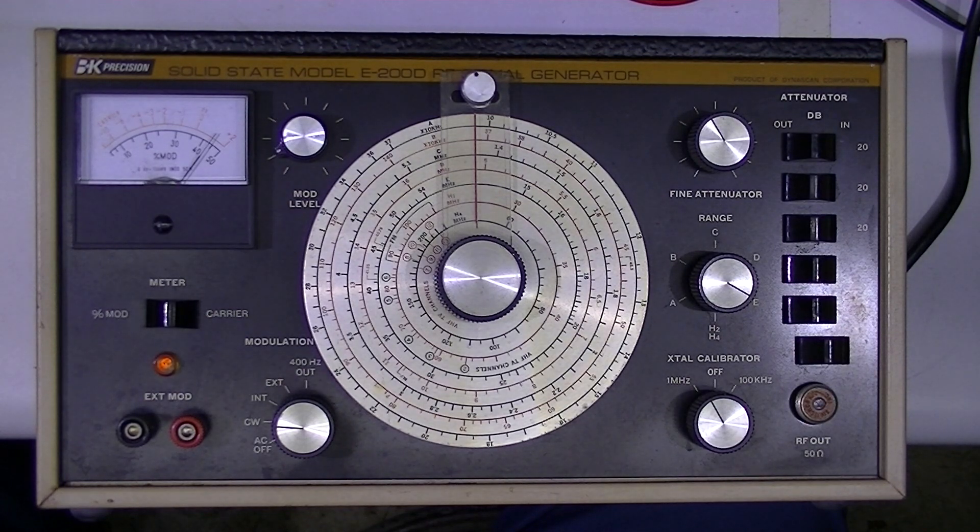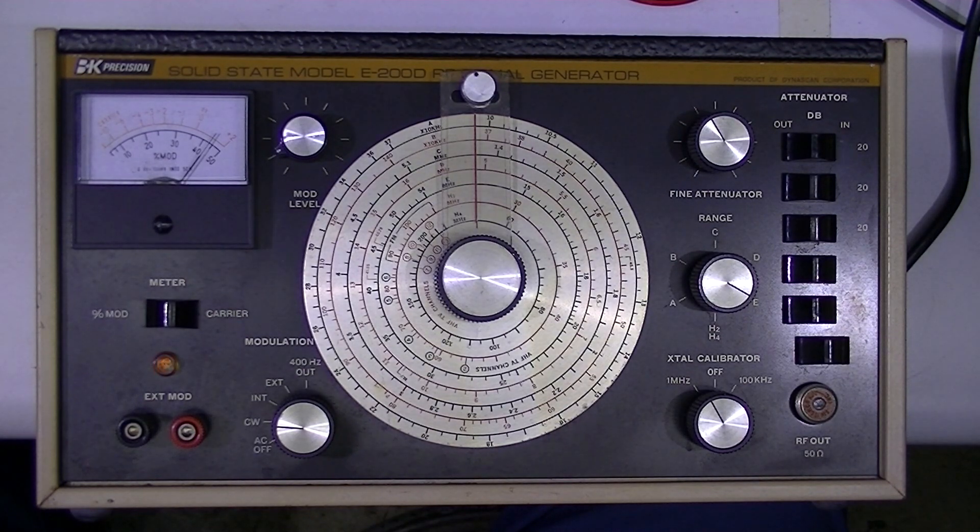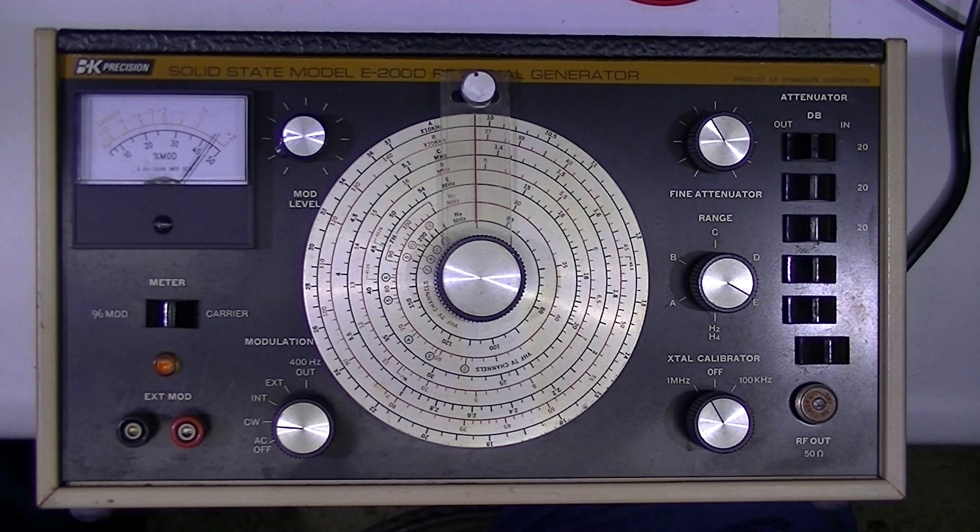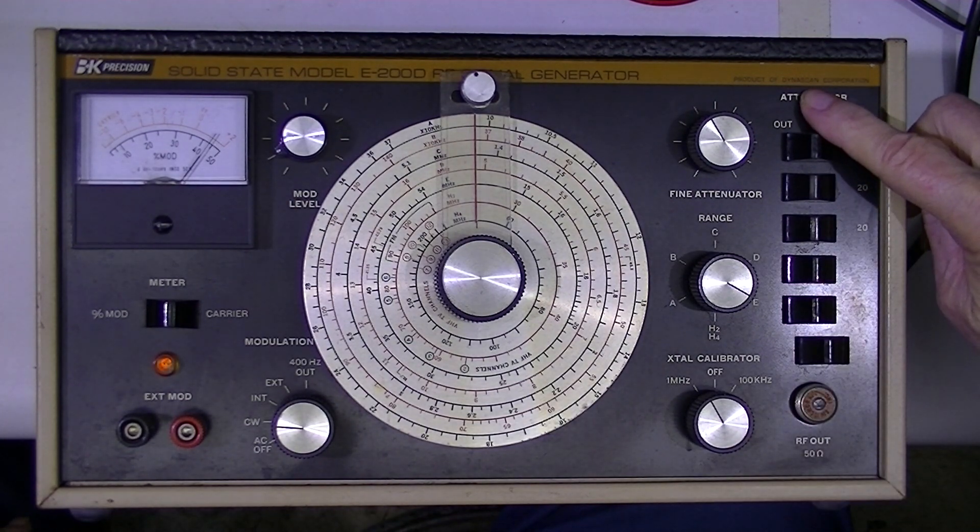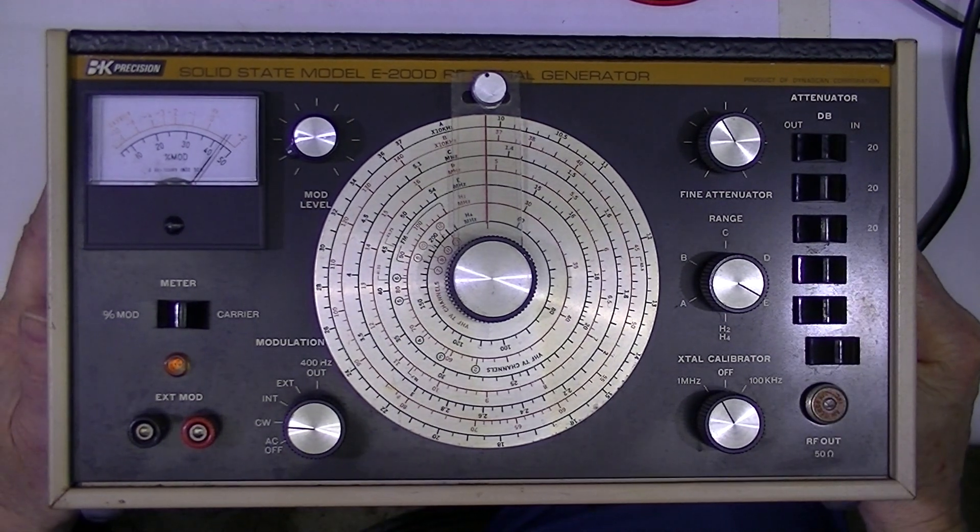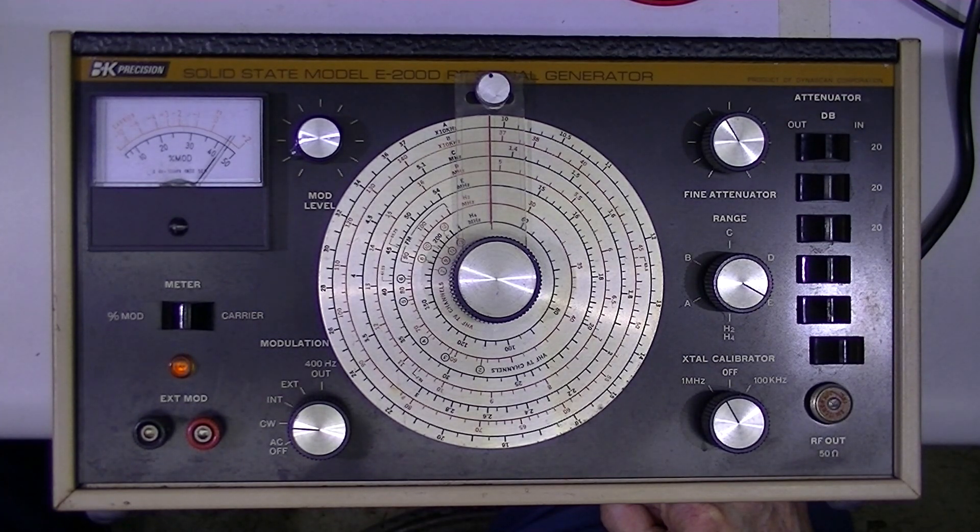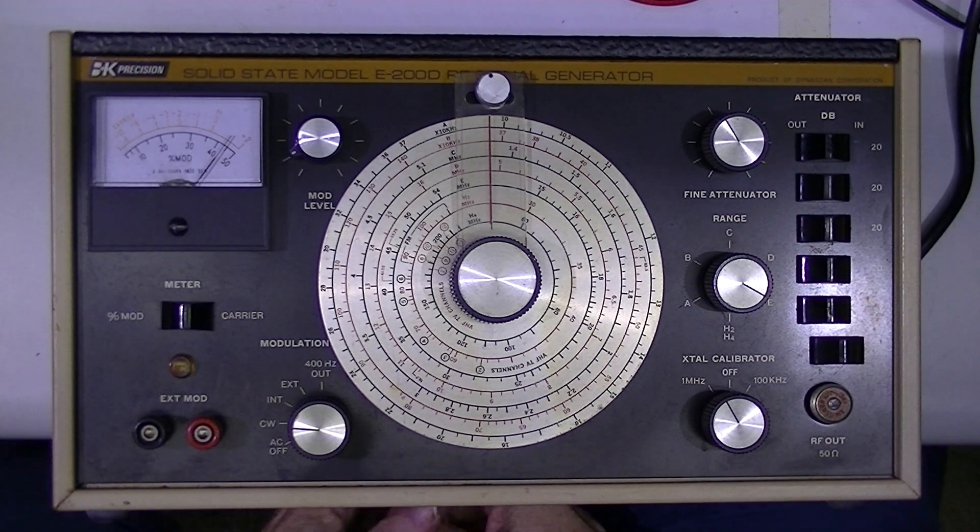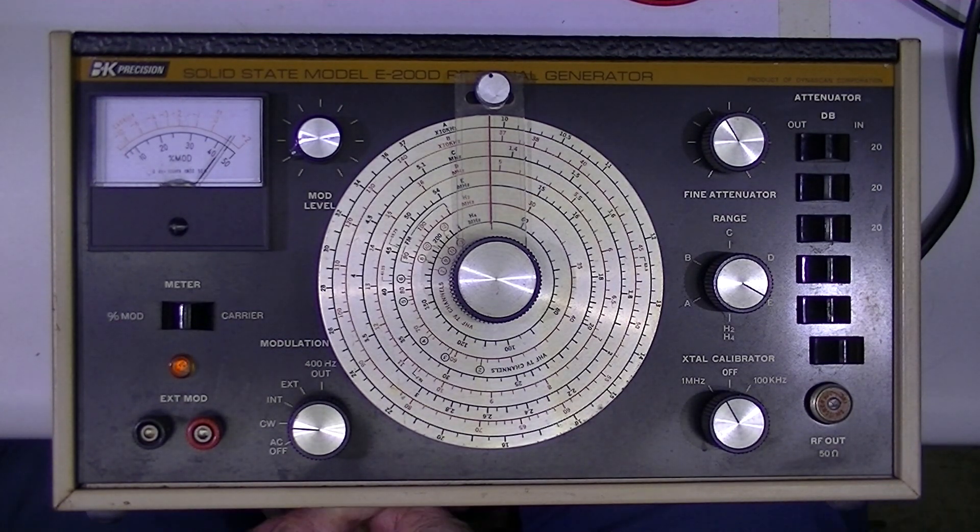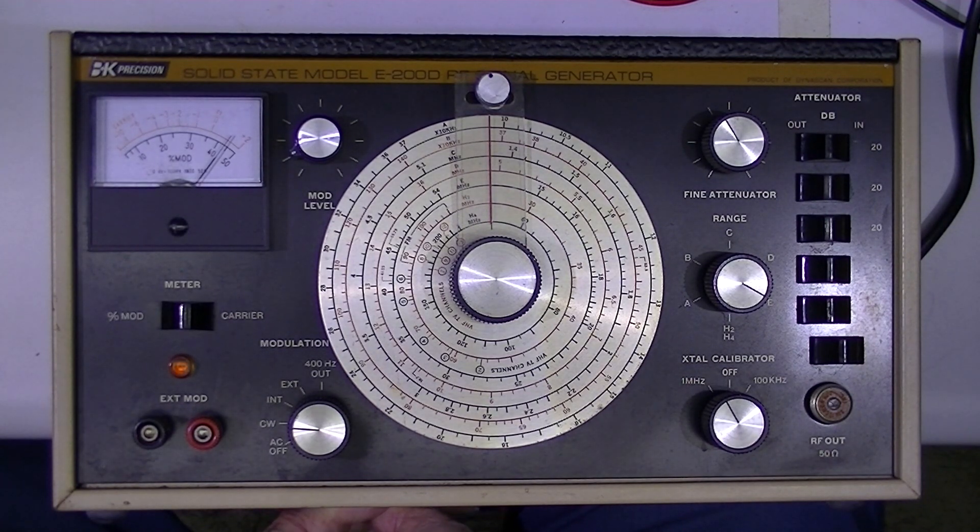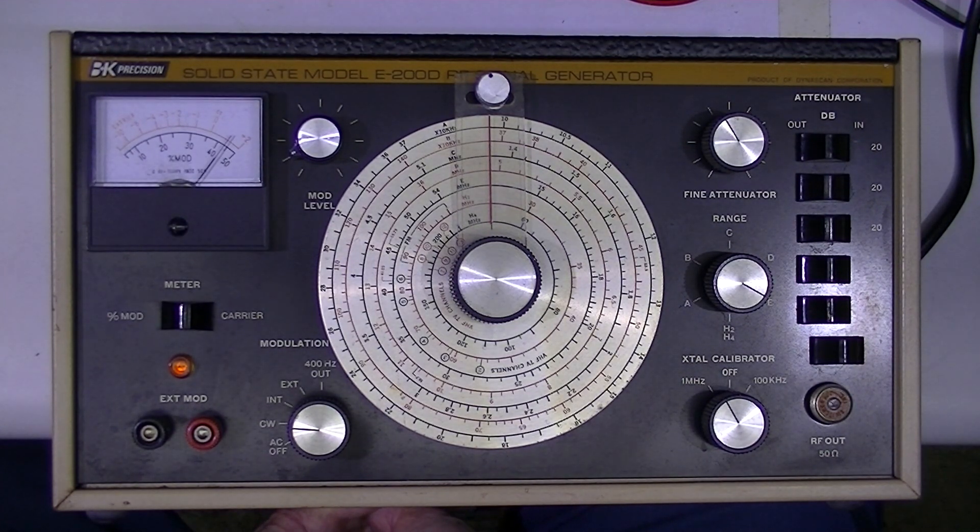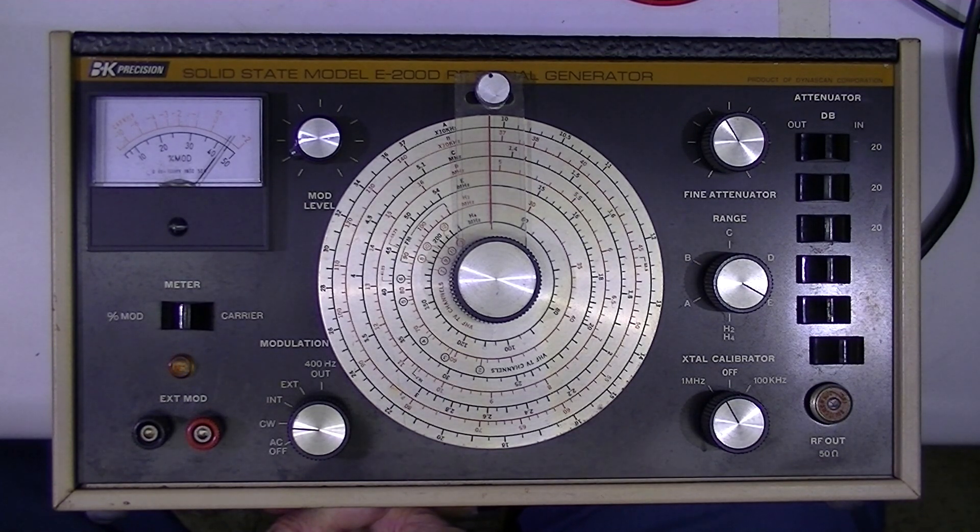This is a B&K Analyzer. Actually it's a later model, so it's made by DynaScan. DynaScan bought B&K. A general purpose frequency generator. Now this thing was made in the early to mid 70's and at the time it was considered a very good device.